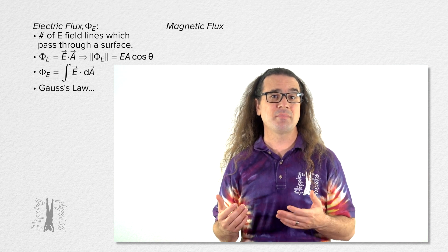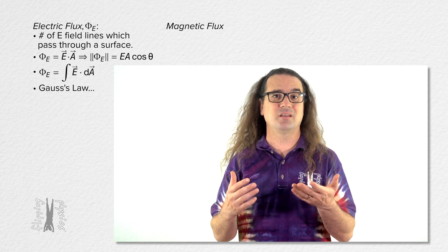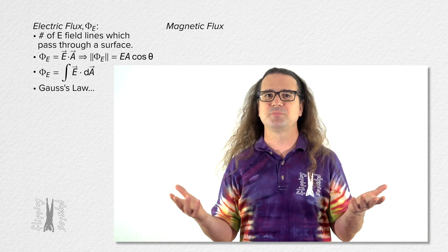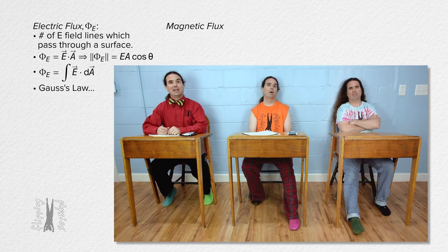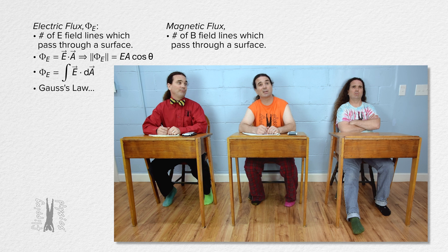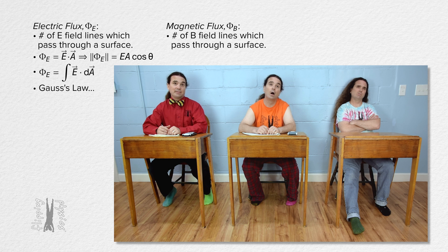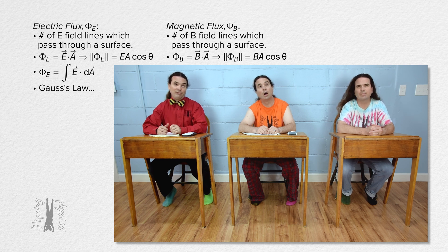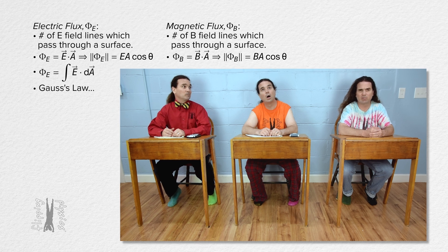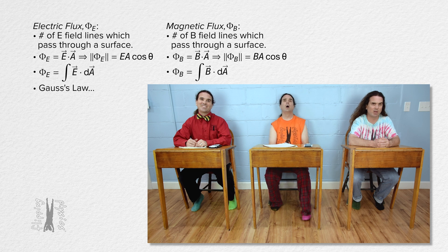Magnetic flux is pretty much what y'all just said for electric flux, only replace electric field with magnetic field. Magnetic flux is like the measure of the number of magnetic field lines which pass through a surface. The symbol for magnetic flux is an uppercase phi with a subscript of capital B. When the magnetic field is uniform and the surface is a two-dimensional plane, magnetic flux equals the dot product of the magnetic field vector and the area vector, or the magnetic field times area times the cosine of the angle between those two vectors. The more general equation for magnetic flux is that it equals the integral of the dot product of the magnetic field vector and the infinitesimal area vector dA.